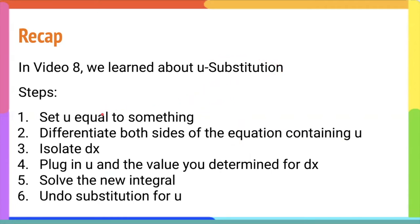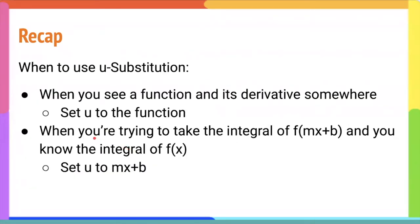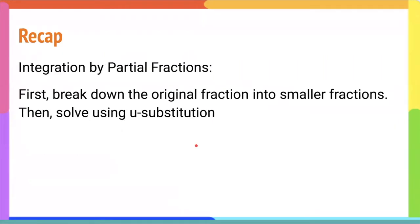Here are the steps for u-substitution: set u equal to something, differentiate both sides of the equation containing u, isolate dx, plug in u and the value you determined for dx, solve the new integral, and finally undo the substitution. To integrate by partial fractions, you first break down the original fraction into smaller fractions and then solve using u-substitution.